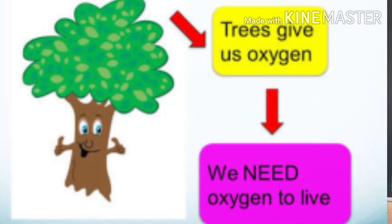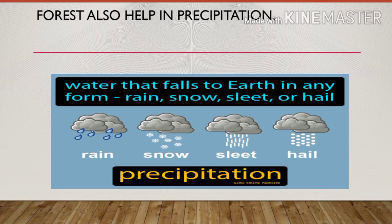Forest also helps with precipitation. You can see this in the image. Precipitation means the falling of rain, snow, etc. That is known as precipitation.